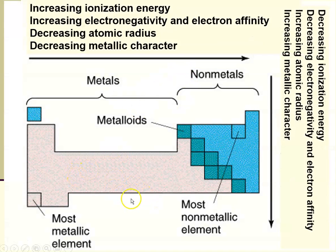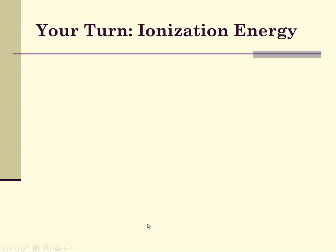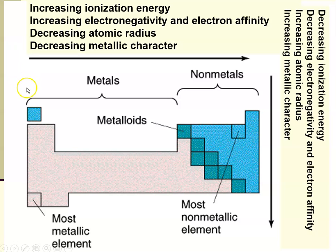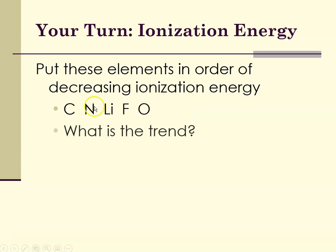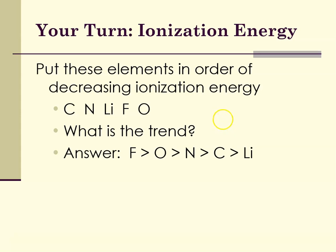Reminding ourselves what our trends are — now ionization energy. Ionization energy increases from left to right across a row and decreases from top to bottom down a group. Put these elements in order of decreasing ionization energy. Again, carbon, nitrogen, lithium, fluorine, and oxygen — they're all in the same row or period. As you move from left to right it increases, and we're asked for decreasing. So the one that's farthest to the right would have the highest ionization energy, which would be fluorine, and lithium on the left would have the lowest ionization energy.